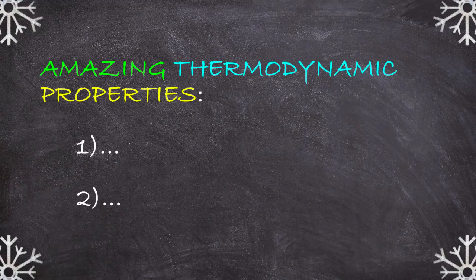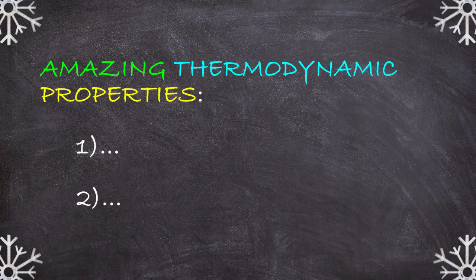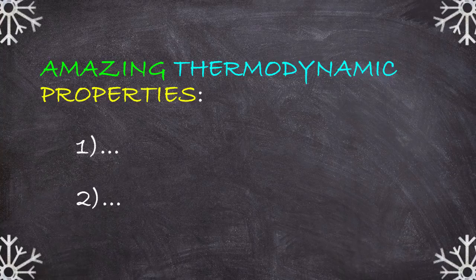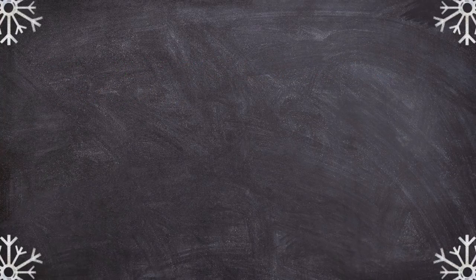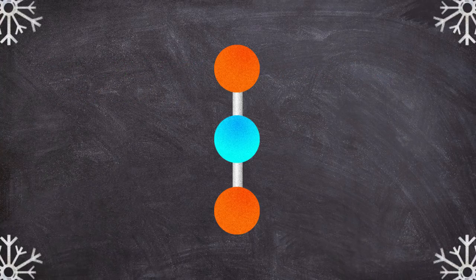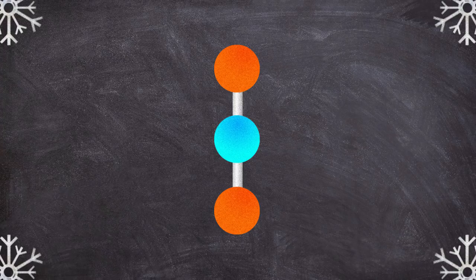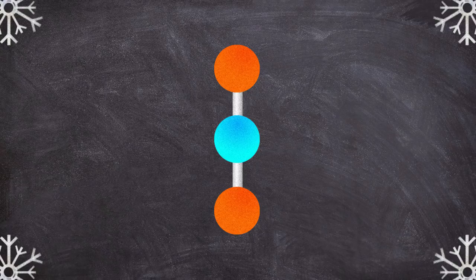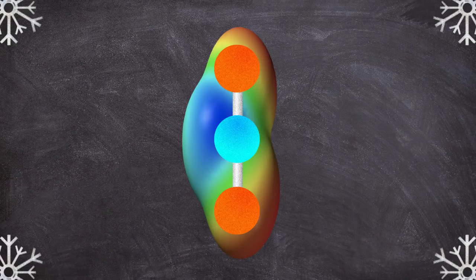Both of the properties I want to talk about today, as well as many other unusual properties of water we won't get into here, ultimately originate from the unusual molecular shape of good old H2O. In an H2O molecule, you've got an oxygen atom bonded to two hydrogen atoms, and due to some complexity of how the electrons are arranging themselves in this molecule, the whole thing is bent.